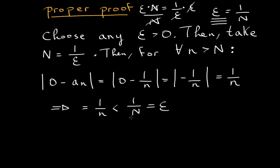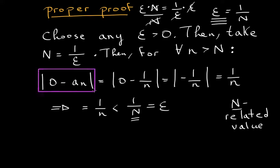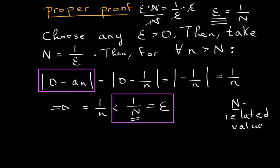In your proof, make sure you have your big N — that's the whole goal. You have to show that this thing is less than some N-related value; you have to have your big N somewhere in there. At the end of the day, what you want to have is the difference between the limit and the sequence being less than epsilon. That's what we want.